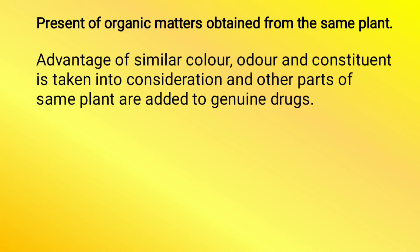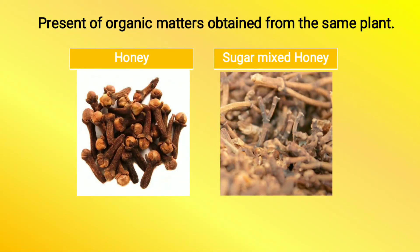The next one is presence of organic matter obtained from the same plant. Advantage of similar color, odor and constituents is taken into consideration, and other parts of the same plant are added to the genuine drug. For example, here you can see genuine clove (laung) is adulterated with clove stalks or clove stems. The seller charges the price of clove but you receive the stalk or stem — giving the seller more profit. So, presence of organic matter obtained from the same plant — usi plant ka koi anya part jo useful nahi hai, woh genuine drug ke saath mix kar diya jata hai.